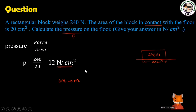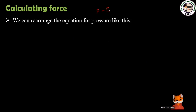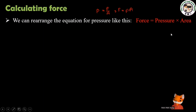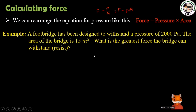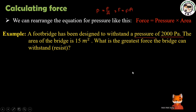Now, rearranging the formula: pressure equals F by A, so F equals P times A, meaning force equals pressure multiplied by area. You can see that the full bridge has been designed with a pressure of 2,000 Pa. The pressure is equal to 2,000 Pa.